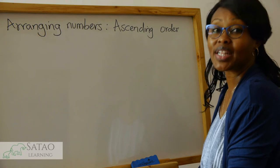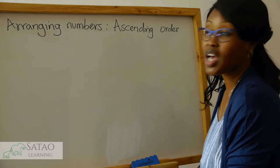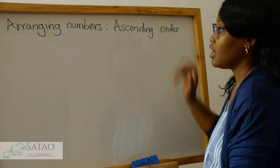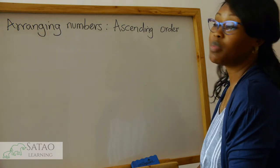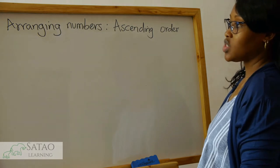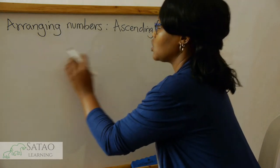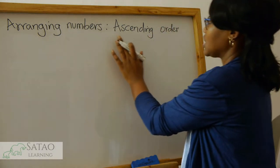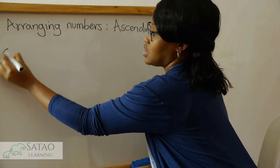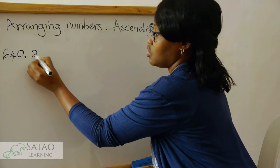Hello boys and girls, and welcome to Satao Learning. Today we are going to see how we can arrange numbers in ascending order, and we are going to be looking at up to three-digit numbers. So assuming we are given some numbers and we are supposed to arrange them in ascending order: 640, 23.